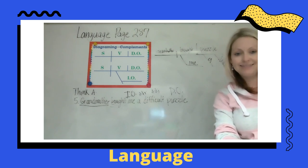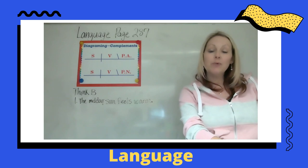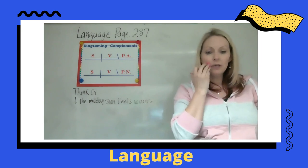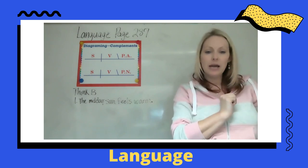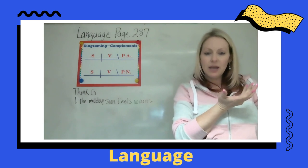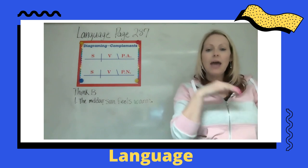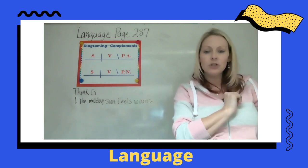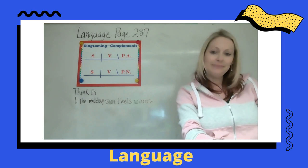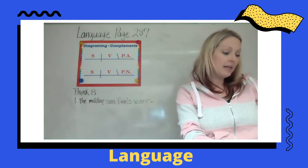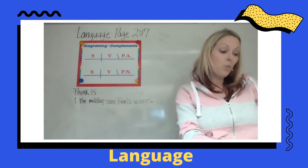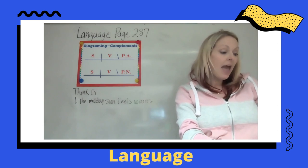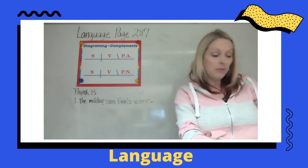We're now going to move on to Think B. Please make sure you're keeping all the ones we did together on one side of the diagram page. Think B says: underline the subject once and the verbs twice, then put parentheses around the prepositional phrase, and diagram these sentences on the paper.